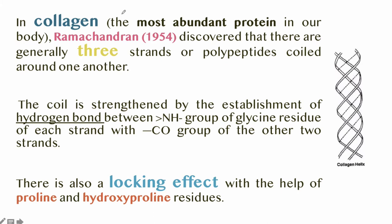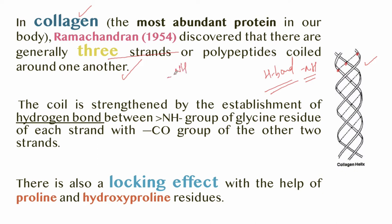Collagen is the most abundant protein in our body. Ramachandran discovered that collagen generally has three strands or polypeptides coiled around one another. This is a collagen helix. The coil is strengthened by hydrogen bonds between the NH group of glycine residues of one strand and the CO of the other two strands. There is also a locking effect with the help of proline and hydroxyproline residues.